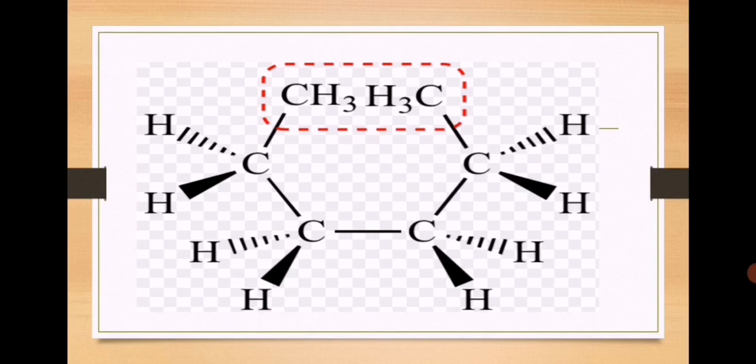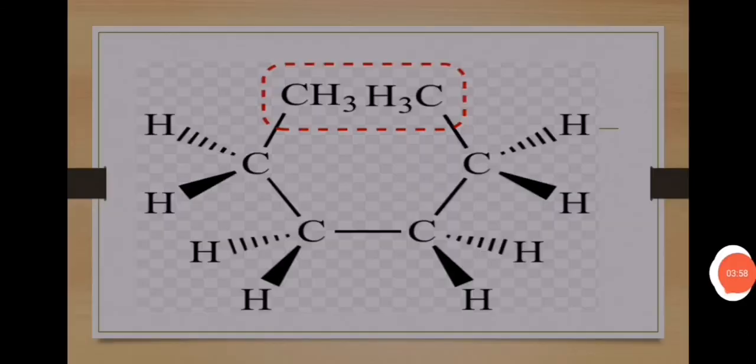So these were the three reasons why cyclic compounds — cycloalkanes — are less stable than aliphatic straight-chain alkanes. That's all about today's lecture.